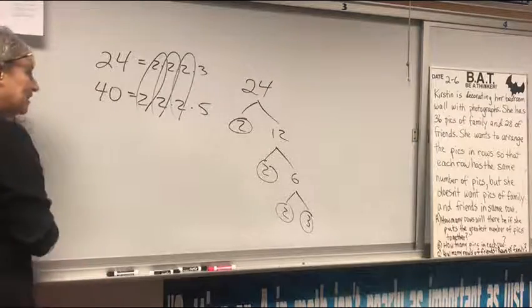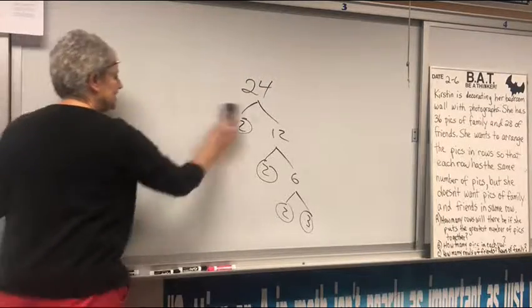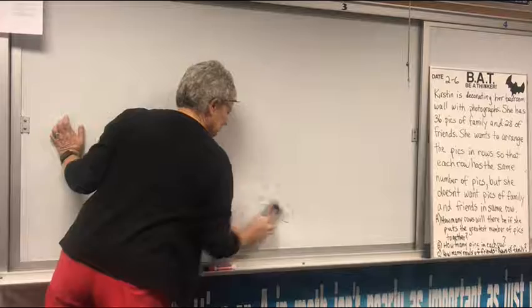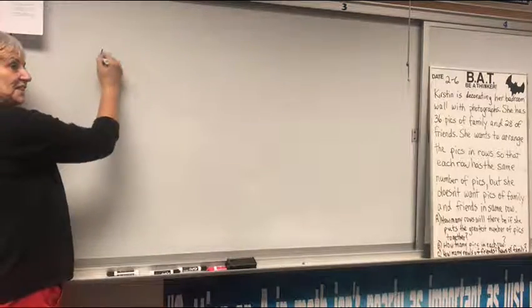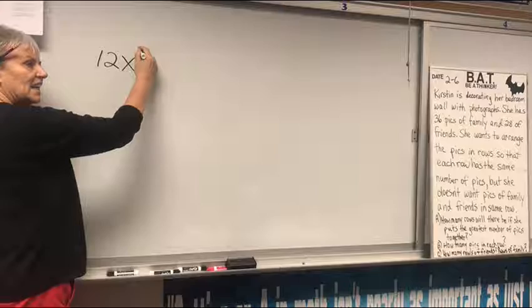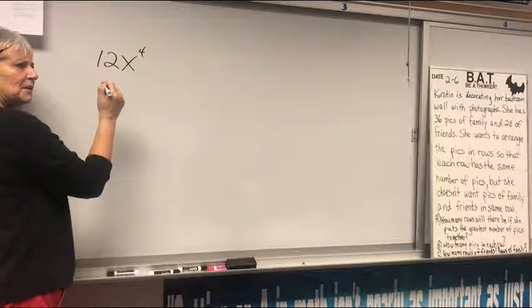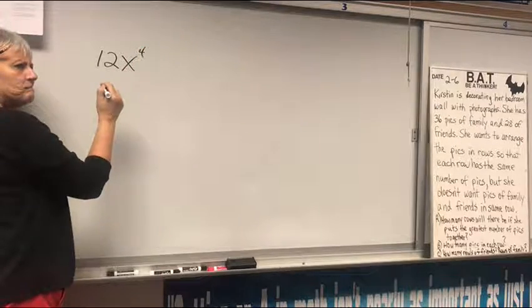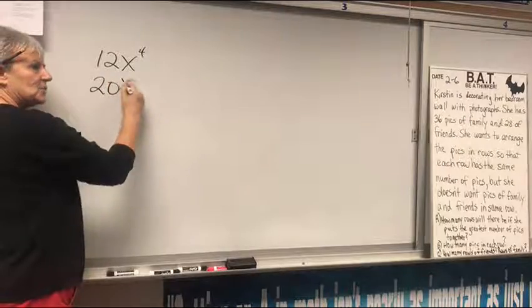Well, if you throw variables in, it's a different story. But the easiest? Variables are way easier than numbers. X to the 4th and 20X squared.